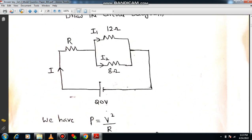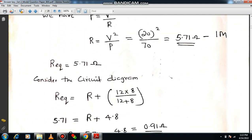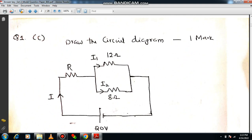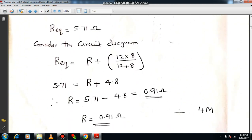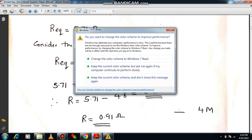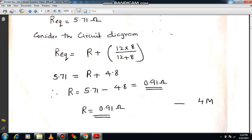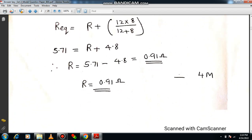R is in series with the parallel combinations of 12 ohm and 8 ohm respectively. So the equivalent resistance will be R + (12×8)/(12+8). Because 12 and 8 ohm both are connected in parallel. Then Req can be substituted as 5.71. Unknown resistance you can keep it as R. If you simplify the parallel combination, equal resistance will be R1R2/(R1+R2), you are able to get 4.8. From this expression you can calculate unknown resistance by doing proper simplification. Ultimately you are supposed to get R = 0.91 ohm. You will be getting 4 marks.